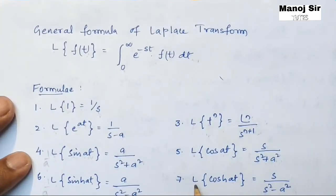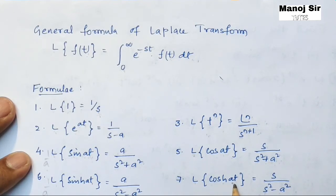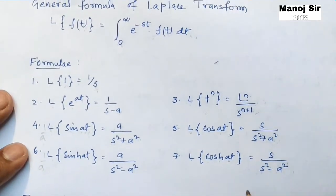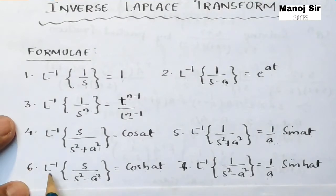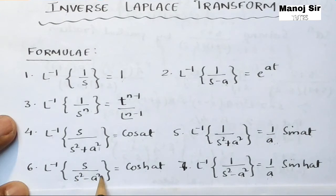Now the last two formulae. Laplace transform of cosh(at) equals s / (s² − a²). Therefore, inverse Laplace transform of s / (s² − a²) equals cosh(at). Note the minus sign in the denominator.